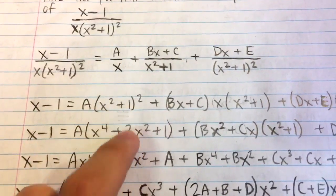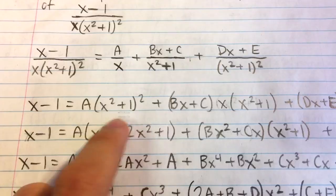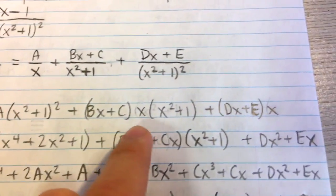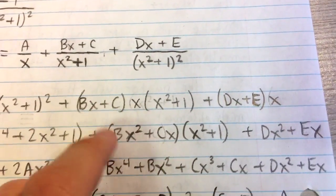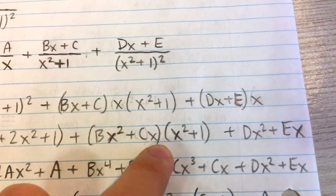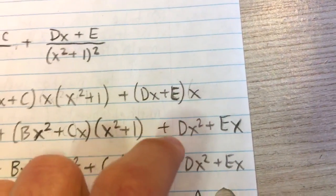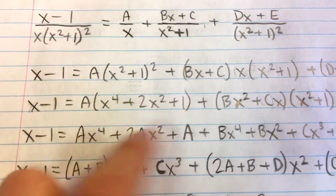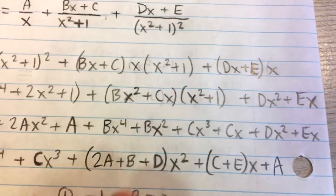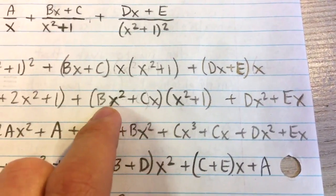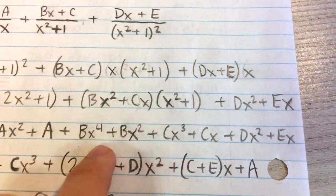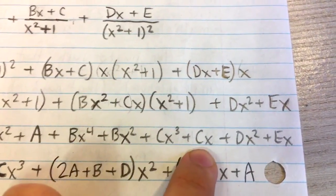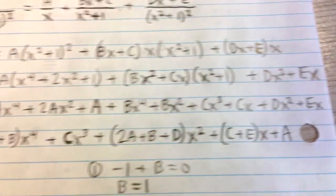Now we expand everything. (x squared plus 1) squared foils out to x to the fourth plus 2x squared plus 1. For the Bx plus C term multiplied by x, we get Bx squared plus Cx. For the Dx plus E term multiplied by x, we get Dx squared plus Ex. Going back to the A term, multiplying by each of the three expanded terms gives those results. Then we FOIL (Bx squared plus Cx) times (x squared plus 1) to get four terms, plus Dx squared plus Ex at the end.